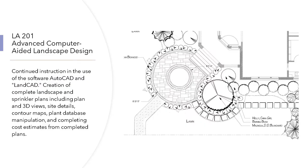Beginning February 1st, 2021, our Spring semester will have the following classes. LA 201, Advanced Computer Aided Landscape Design. This is continuing the instruction from LA 200, which is a prerequisite. It continues instruction in the use of AutoCAD software, covering the creation of complete landscape and sprinkler plans, including plan and 3D views, site details, contour maps, plant database manipulation, and completing cost estimates from completed plans.